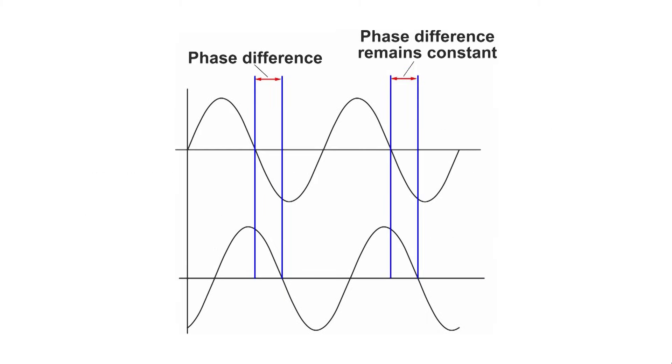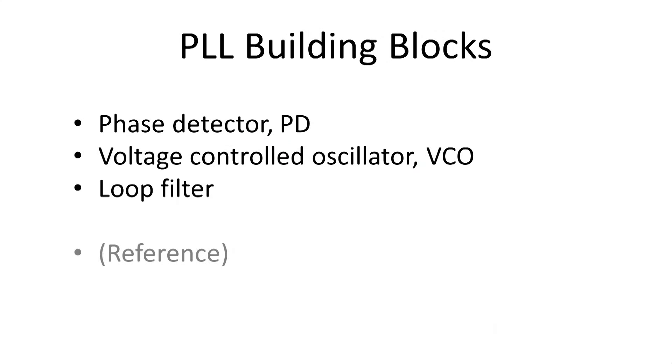If it doesn't change, it means that the two signals are moving around the phase circle at exactly the same rate. If they are moving around the phase circle at the same rate, they must be oscillating at exactly the same frequency. The key here is that if the phase difference is not changing, the frequencies are exactly the same. This concept is put to use in a phase-locked loop.